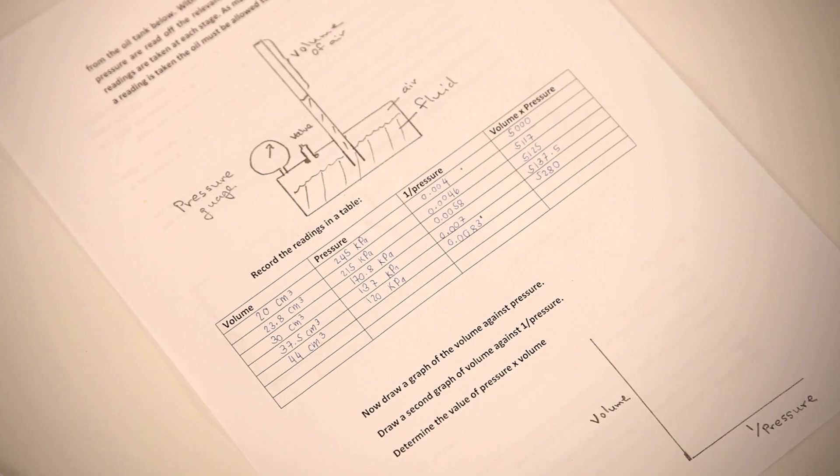Write the recorded measurements in a table. With six or so readings, two graphs can be drawn.